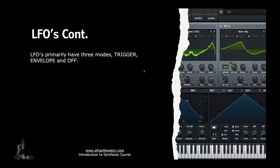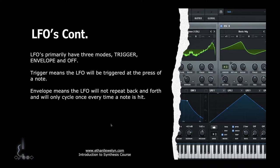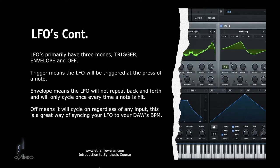LFOs primarily have three modes: trigger mode, envelope mode, and off. Trigger means the LFO will begin its oscillation at the start of a note - if you press any note it'll start from the beginning. Envelope means the LFO will not repeat; it will only cycle once every time a note is hit. Off means it will cycle regardless of any input, so if you want to sync your LFO to your BPM in your DAW you'd select off, since you want it synced to the grid and not to whether a note is being pressed.